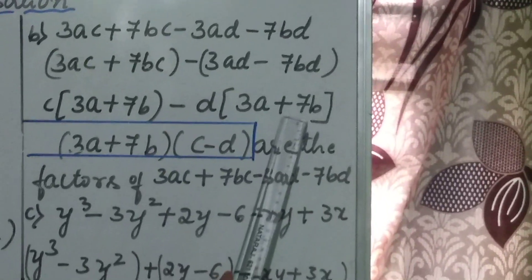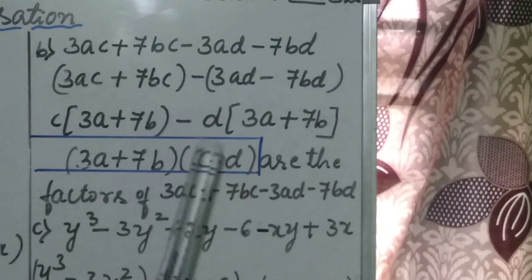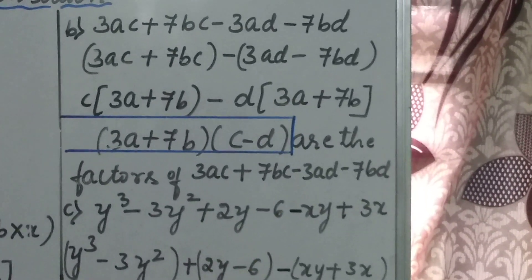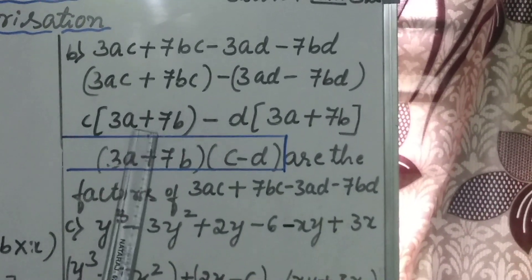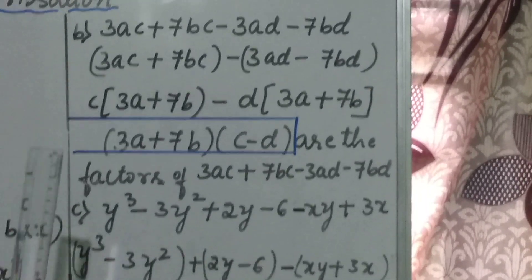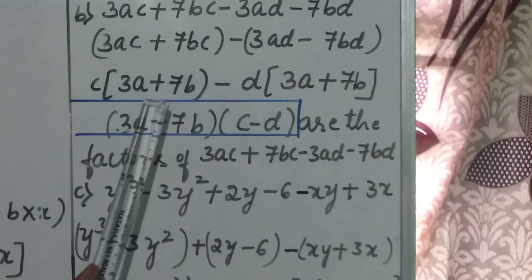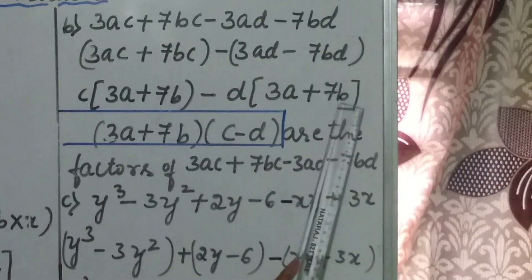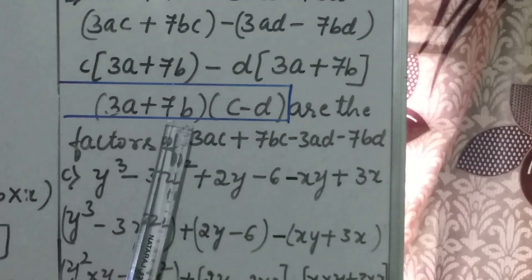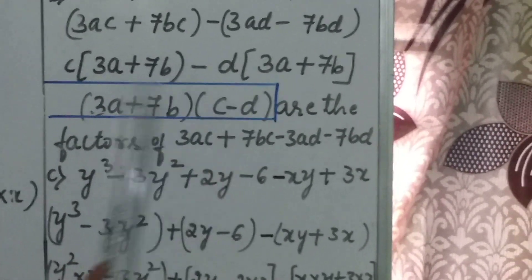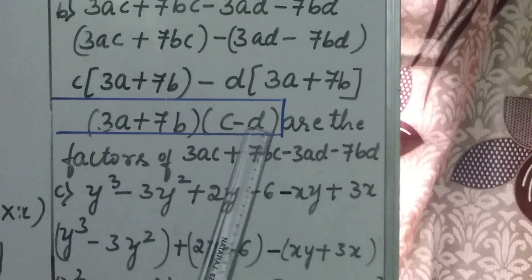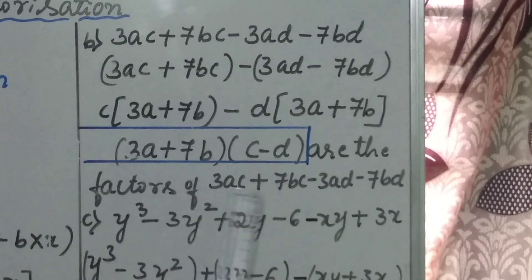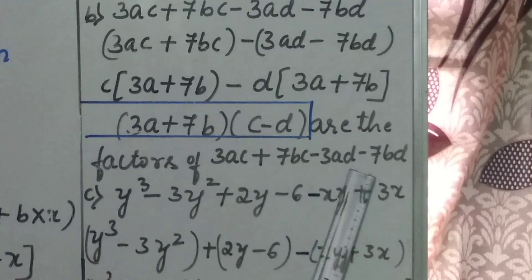You may ask why. Here, you take d outside with a negative sign — plus into minus is minus, and minus plus into minus gives minus 7bd when opened. Therefore next step: applying the first method of factorization — taking common factors — 3a plus 7b is the common factor in both terms. Taking 3a plus 7b outside the bracket, the remaining terms are c minus d. Therefore 3a plus 7b into c minus d are the factors of 3ac plus 7bc minus 3ad minus 7bd.